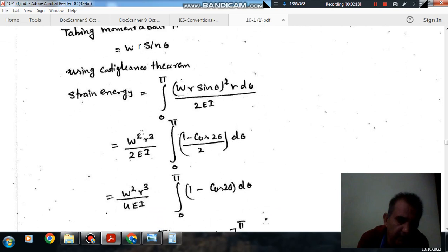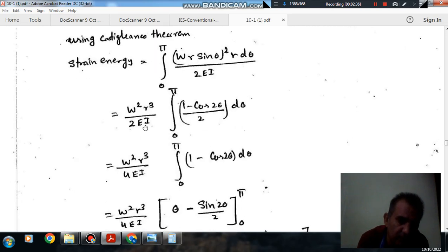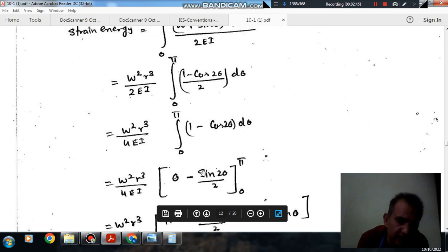Now let me integrate it. W is constant, R is constant, E is constant, I is constant. So we can take W square R cube over 4EI outside of integration. And sin square theta can be 1 minus cos 2 theta divided by 2. And multiply by d theta. Now we have to integrate that only 1 minus cos 2 theta.